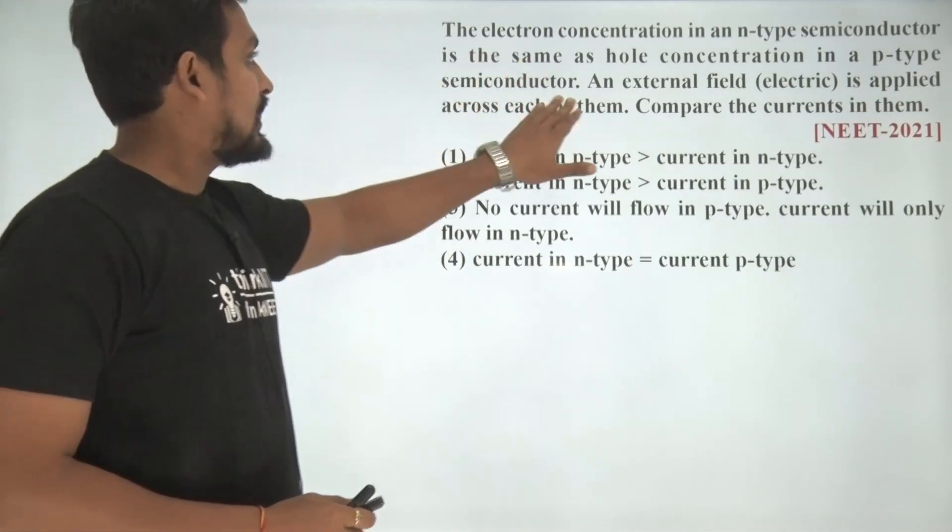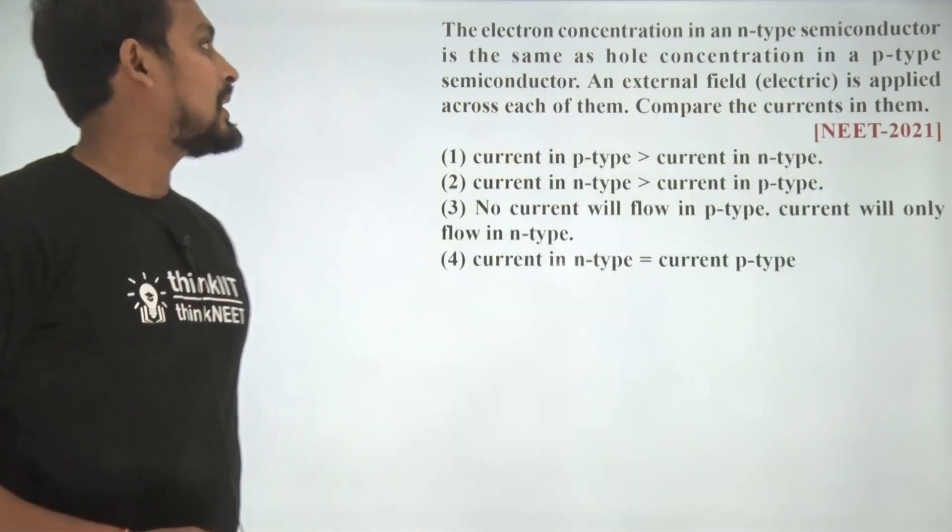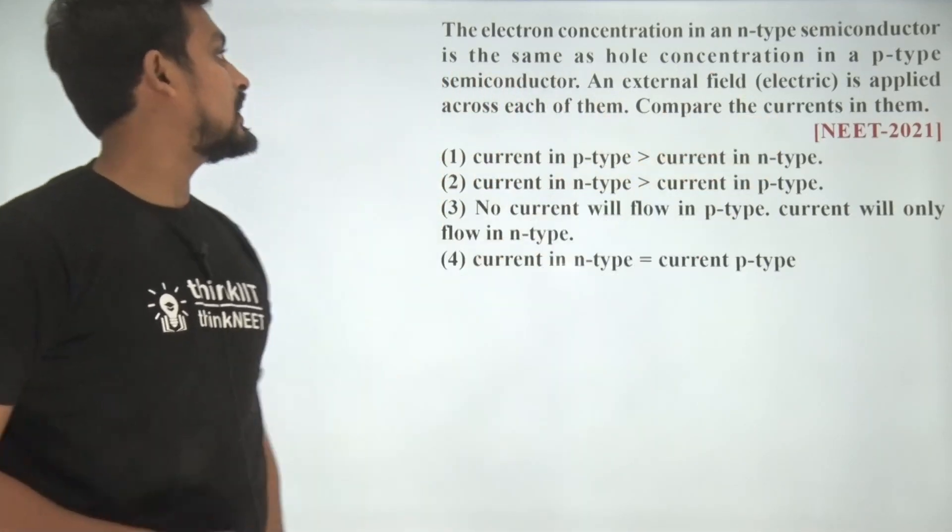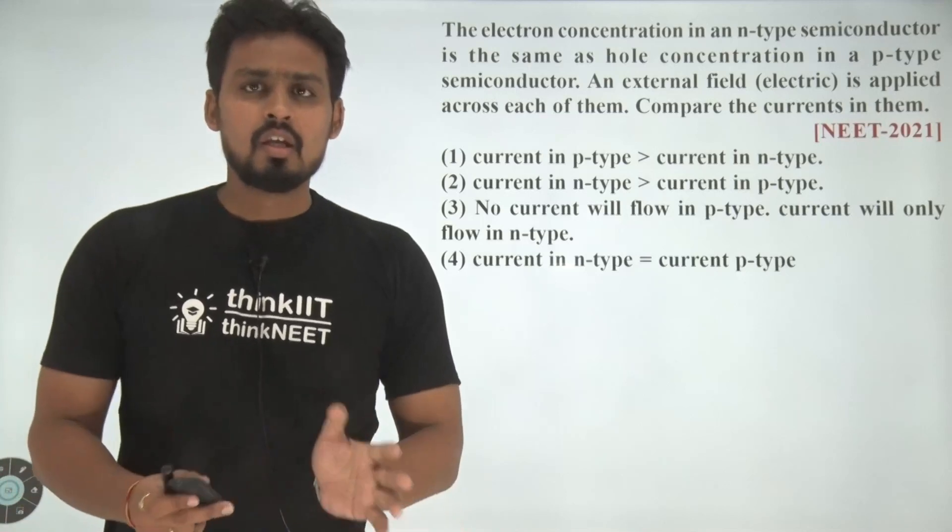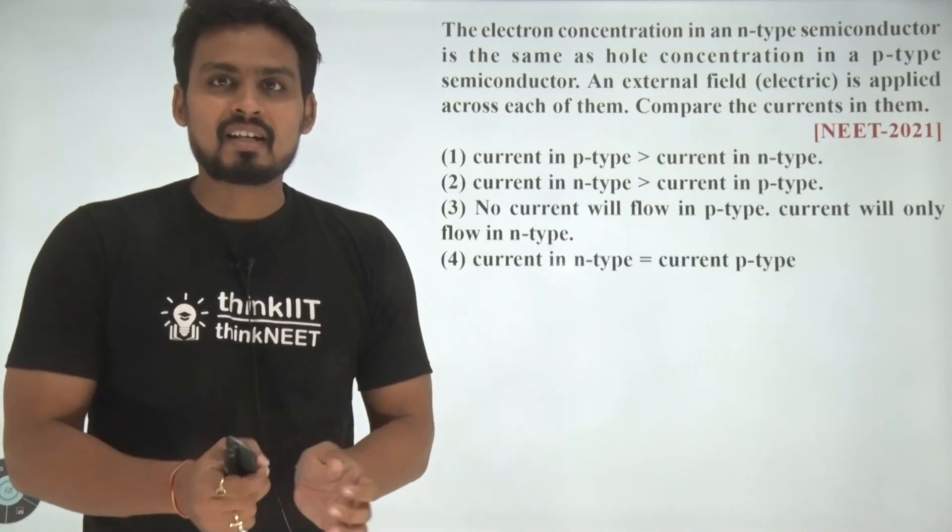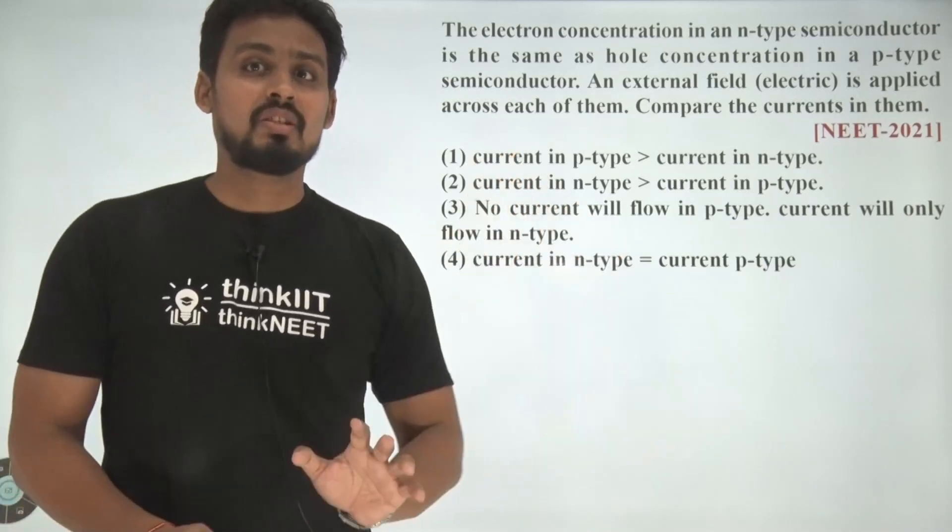The question says that the electron concentration in an N type semiconductor is the same as hole concentration in a P type semiconductor. We have doped these two semiconductors such that their concentration remains same.